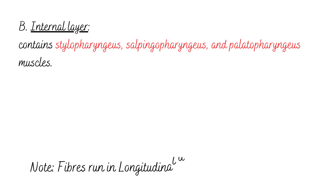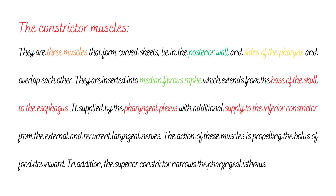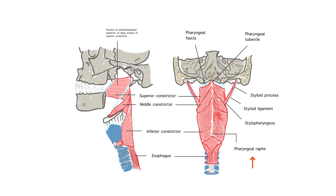The internal layer fibers run in a longitudinal direction. The three constrictor muscles form curved sheets, lie in the posterior wall and sides of the pharynx, and overlap each other. They are inserted into the median fibrous raphe, which extends from the base of the skull to the esophagus. They are supplied by the pharyngeal plexus, with additional supply to the inferior constrictor from the external and recurrent laryngeal nerves. The action of these muscles is propelling a bolus of food downwards. In addition, the superior constrictor narrows the pharyngeal isthmus. As we can see in the diagram of the pharyngeal raphe, the muscles inserting into the median fibrous raphe extend from the base of the skull to the esophagus, and are also supplied by the pharyngeal plexus.